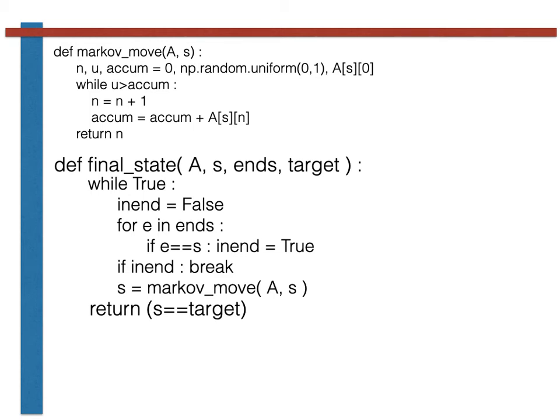Notice that as well as changing the number of arguments to the function, I also changed the variable that is returned. I now return the value of a logical proposition. This function thus returns one if the chain finishes in state target and zero otherwise.